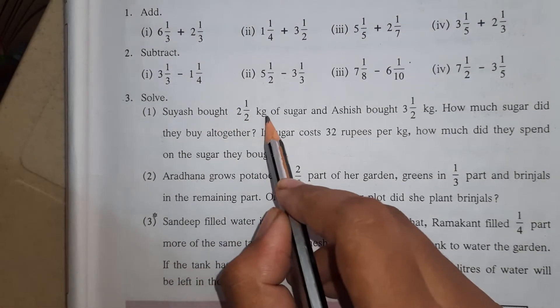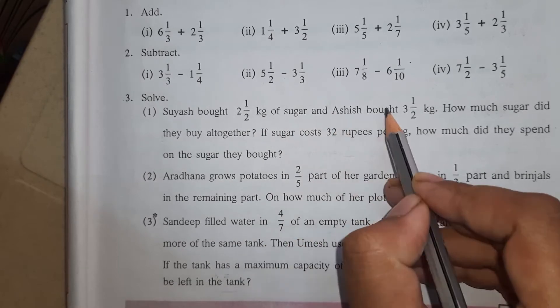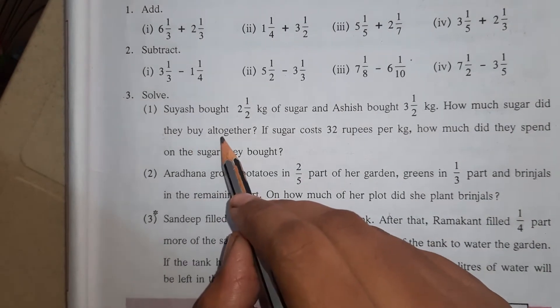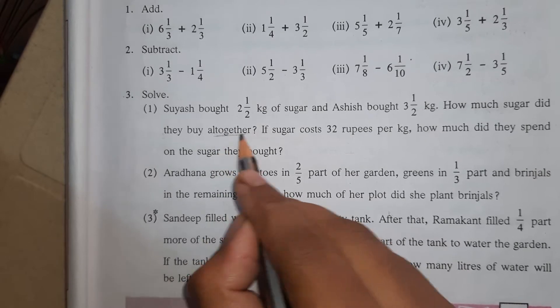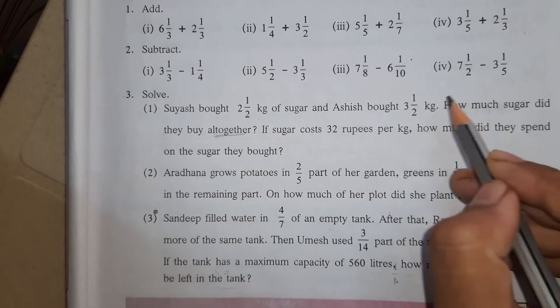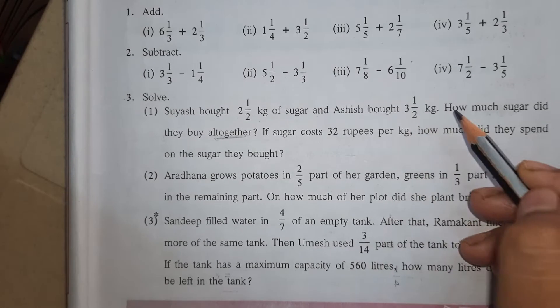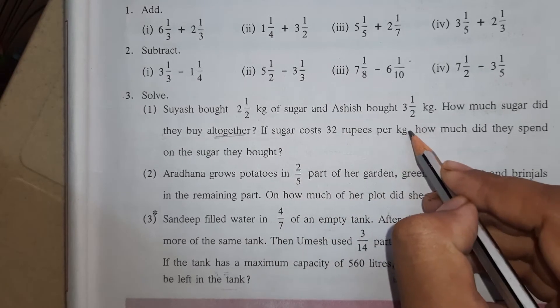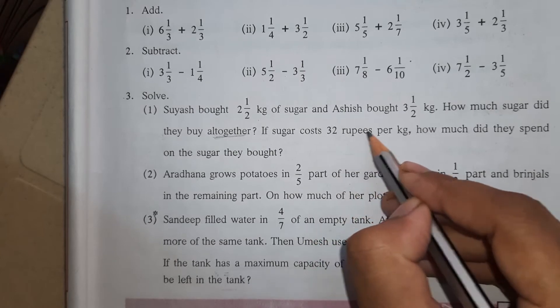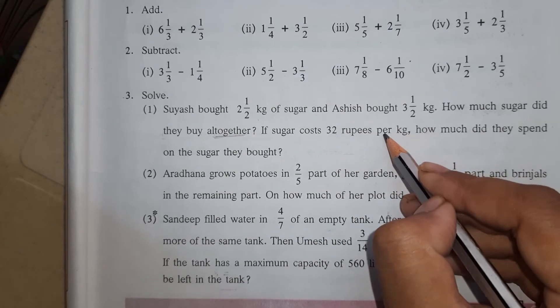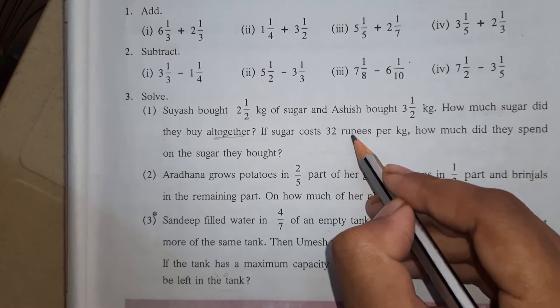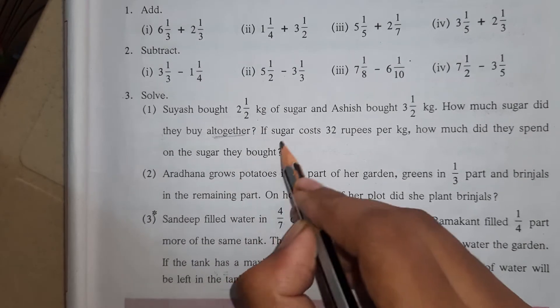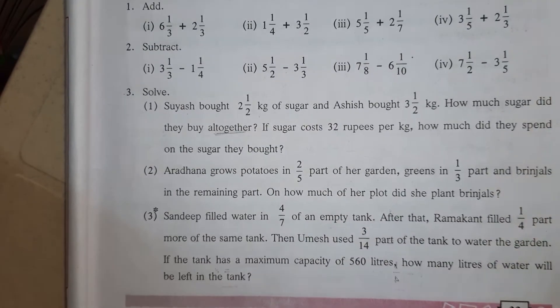Suyash bought 2½ kg of sugar and Ashish bought 3½ kg sugar. How much sugar did they buy altogether? So altogether means here we have to do addition of 2½ and 3½. Then next question they are asking, if sugar costs 32 rupees per kg, okay cost of sugar is 32 rupees per kg. Per kg means 1 kg sugar will cost 32 rupees. So how much did they spend on the sugar they bought? We have to find the amount Suyash and Ashish spent on the sugar.